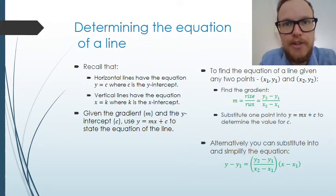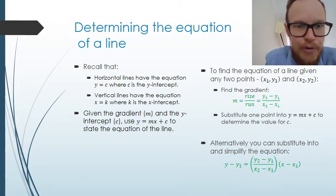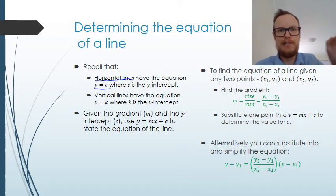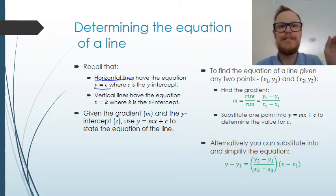We can determine the equation for any line using only two points from the Cartesian plane. But we need to remember a couple of things first. If I've got a horizontal line, they have the equation y equals c. So y will be constant. Horizontal line means y is staying the same the whole way along. That means we have it as a constant value that is unchanging, not dependent on x. So c is going to be the y-intercept where it crosses the y-axis.